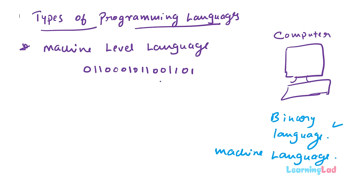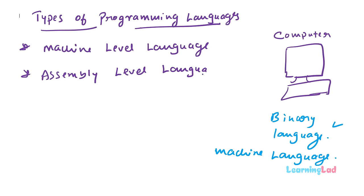To solve these kinds of problems, another type of programming language was invented, called assembly level language. In assembly level language, instead of combinations of 0s and 1s, mnemonic or symbolic codes were introduced.